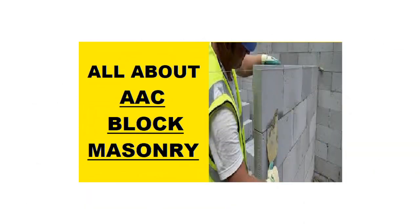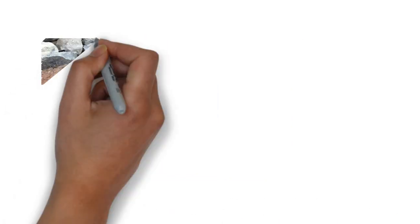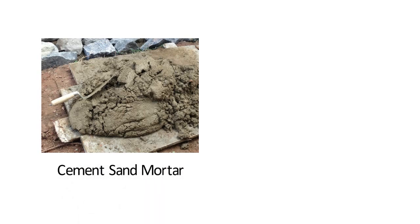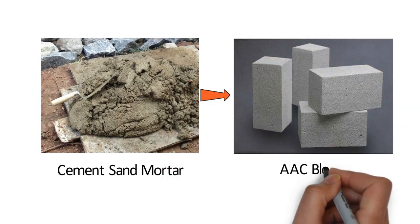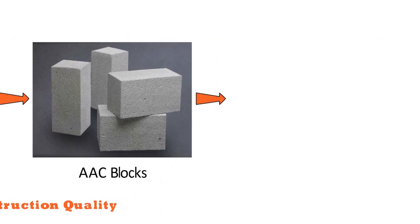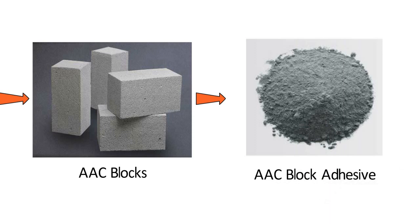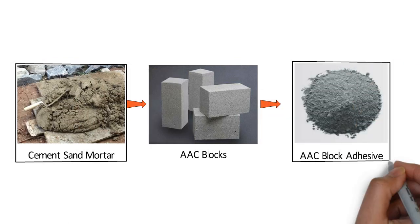Hello friends. I have already made a video on AAC block masonry; the link is given in the description of this video. For masonry construction, cement sand mortar has been used for many decades. But the use of conventional mortar with recently invented AAC blocks has led to low construction quality due to their mismatched properties. Hence, special adhesives have been formulated to match the properties of AAC blocks. In this video, we will compare cement sand mortar with adhesives for AAC block masonry.